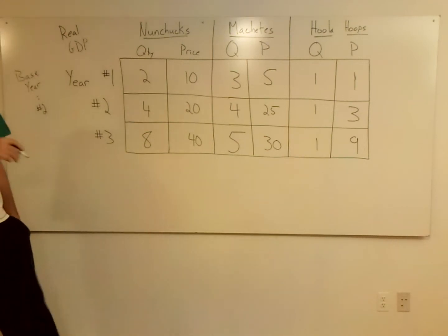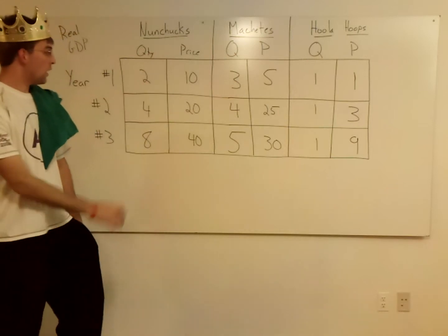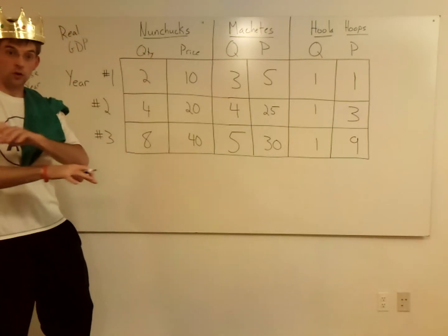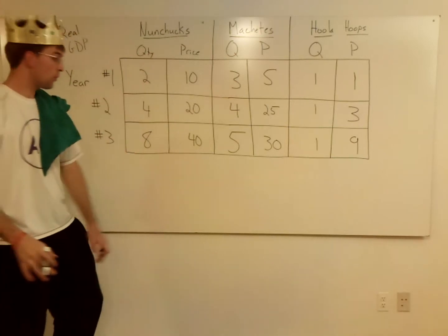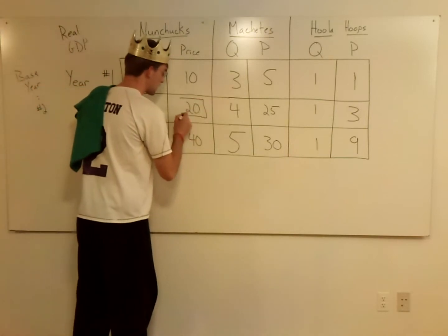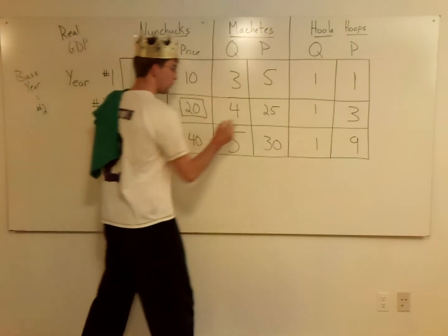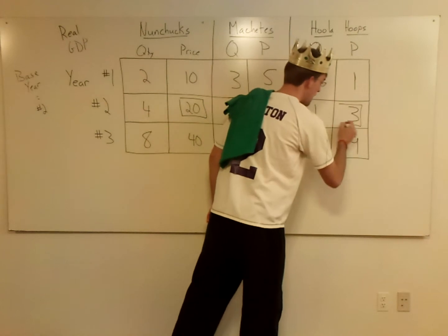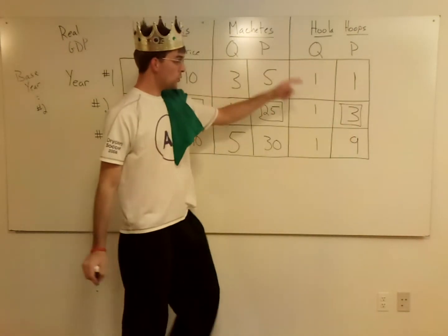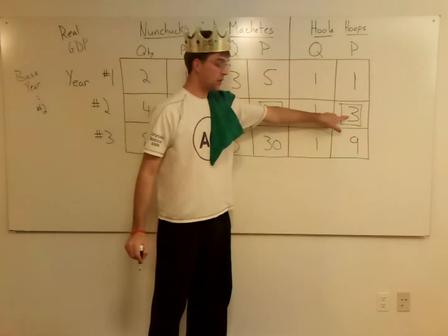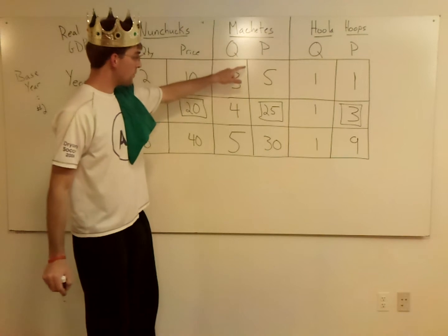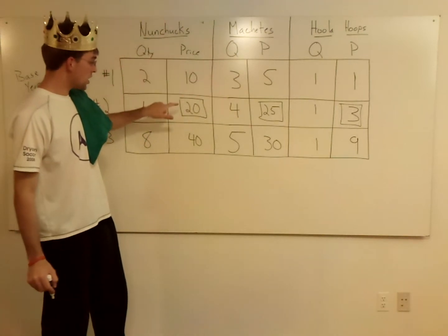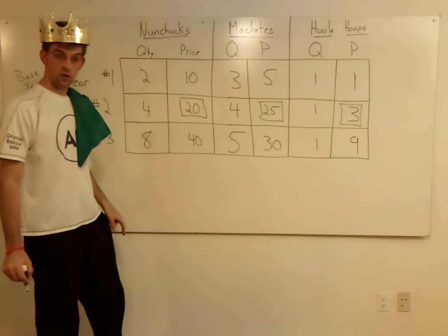The base year I'm going to make year two. As I showed you with the hula hoops, we want to keep the price constant, so I like to put a little box around the prices I'm going to use. Every time I calculate for hula hoops I'm using a price of three, for machetes it's 25, and nunchucks 20.